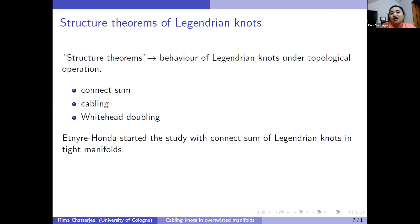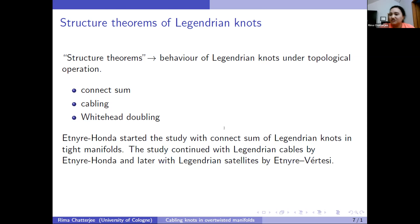Etnyre and Honda started to study the connect sum operation of a Legendrian knot. If you have two Legendrian knots and perform the contact connect sum, we want to know if the geometry of the new knot is inherited from the parent knots or has something new. It turns out that in a tight manifold, the connect sum is not carrying any new information — we can tell how the geometry of the new knot looks just by looking at the parent knots. The study continued with Legendrian cables by Etnyre and Honda, and later by Legendrian satellites, but all of these results are in tight contact manifolds, where there is no over-twisted disc.